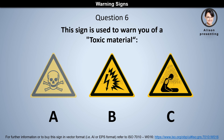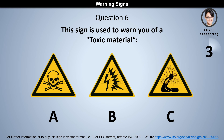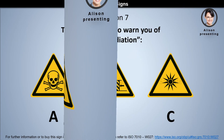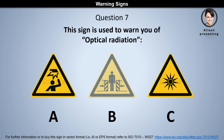Question 6: This sign is used to warn you of a toxic material. Is it a, b, or c? The answer is a.